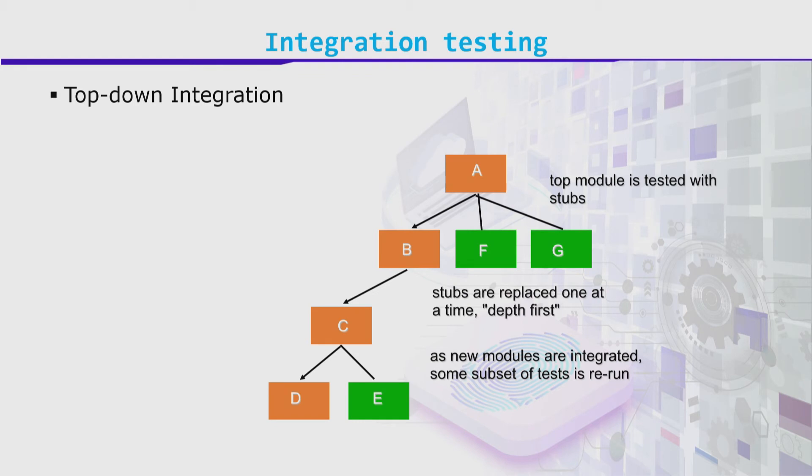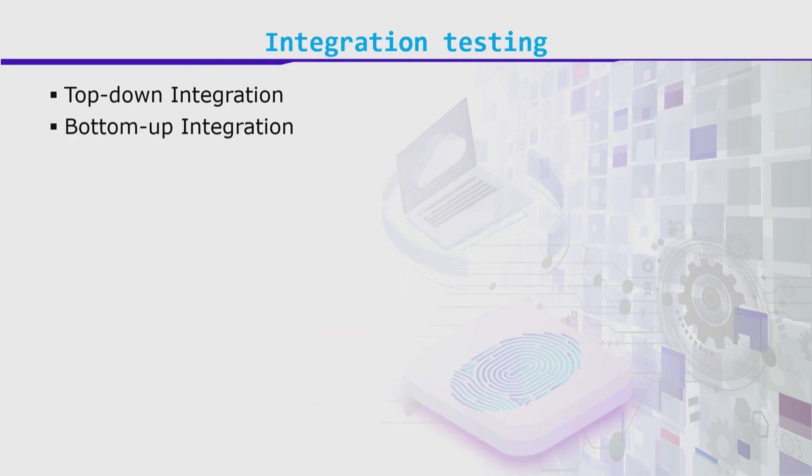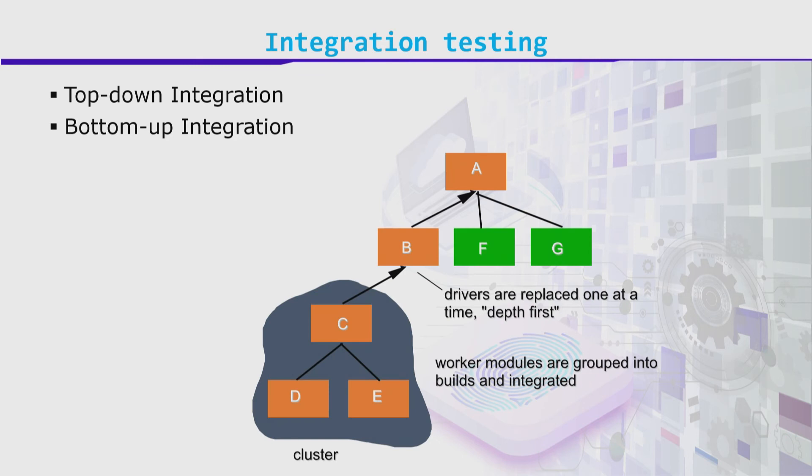Top-down integration and bottom-up integration - we've looked at these in detail. In top-down, we have the top-level modules or system ready first and then integrate the individual units. Whereas in bottom-up, we have the individual modules or units ready first and then build up to the full system.